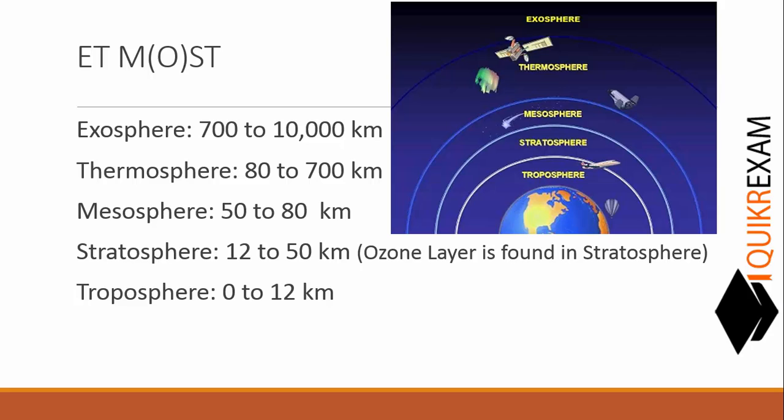And then T for Troposphere, which is the nearest layer to the surface, which is 0 to 12 km away from Earth's surface. From this, you can easily remember the names of layers of atmosphere in order. You only have to remember a single line: ET M(O)ST.